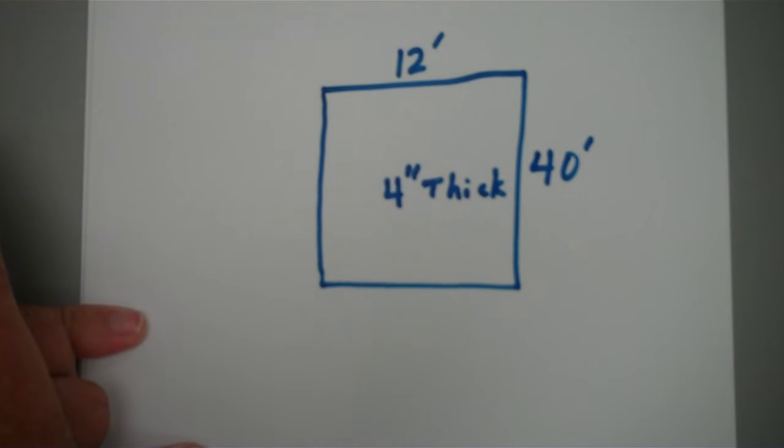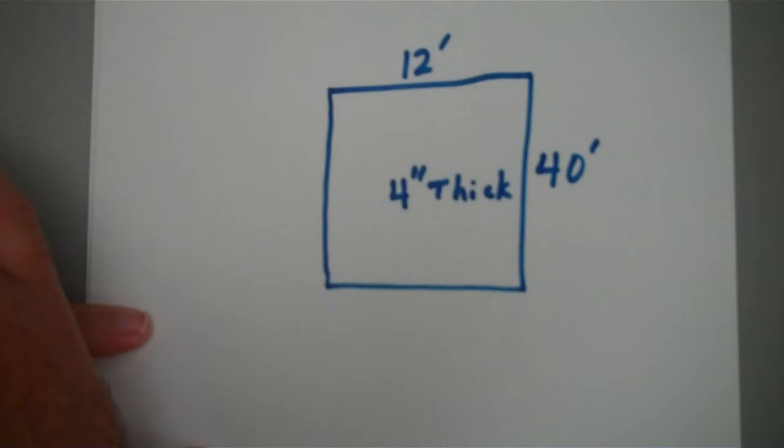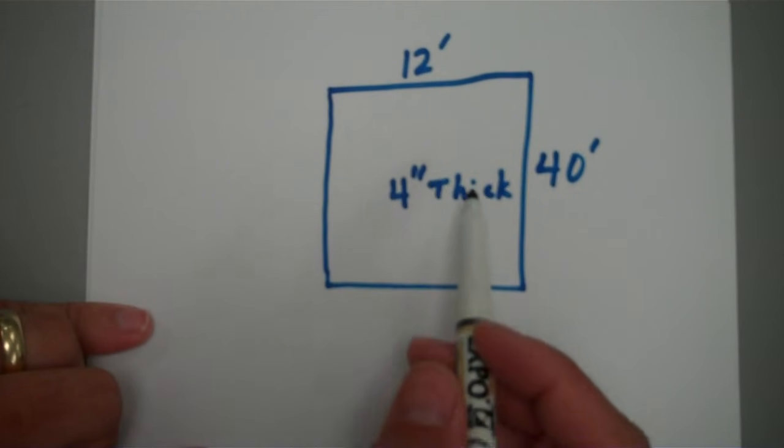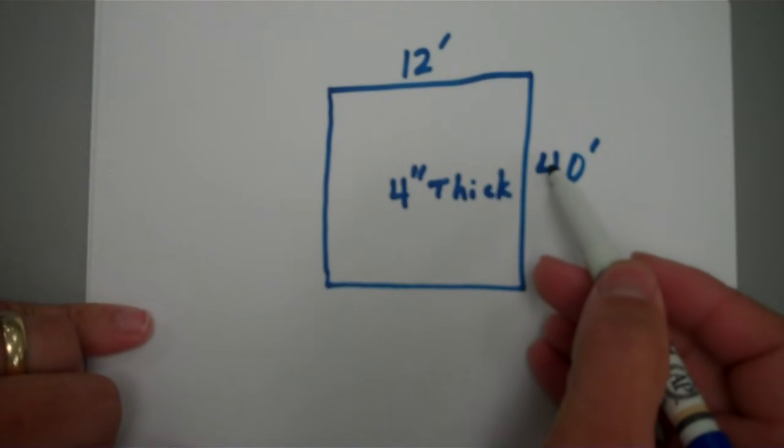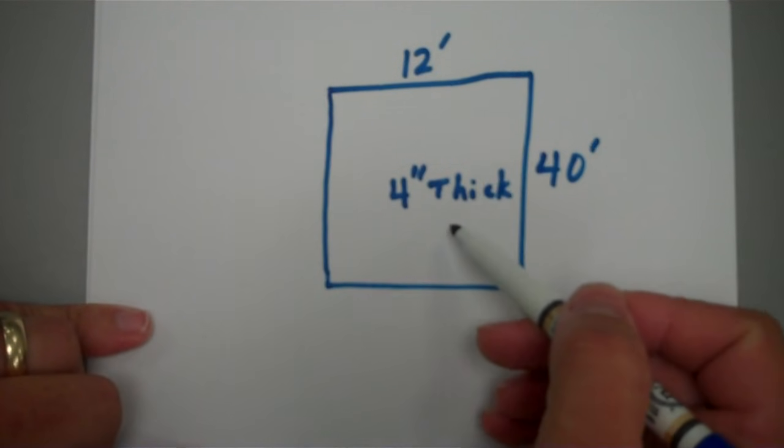So what we've got to figure is just the basic volume. This is just a volume problem. This right here is going to be a concrete pad: 40 foot long, 12 foot wide, 4 inches thick.